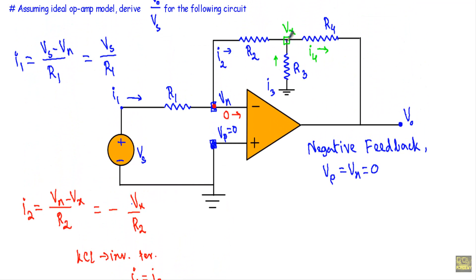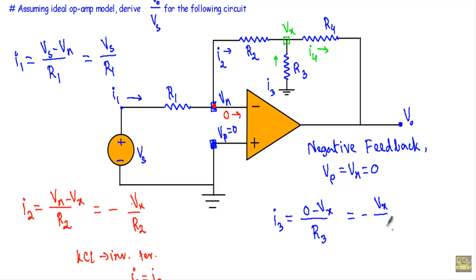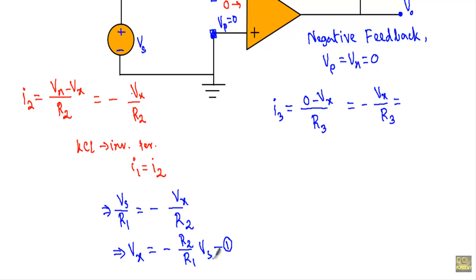Now look at terminal X. From the ground terminal, I3 will be incoming towards terminal X. So I3 equals the ground voltage (0) minus Vx, divided by R3. This gives I3 equals minus Vx by R3. Substituting Vx equals minus R2 by R1 times Vs, the two negatives cancel, giving I3 equals R2 Vs divided by R1 R3. Let's call this equation number 2.